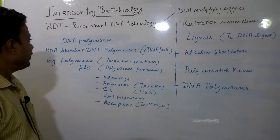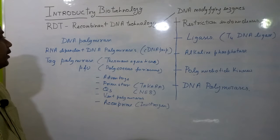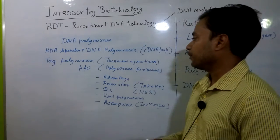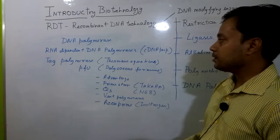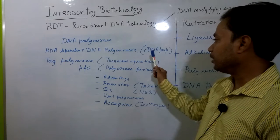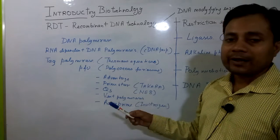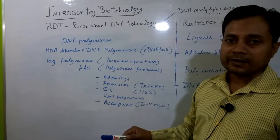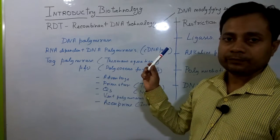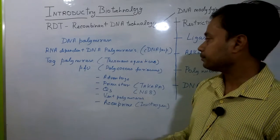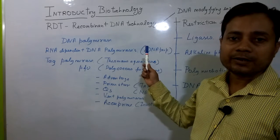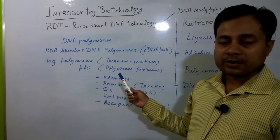The simplest and naturally found polymerases are DNA-dependent DNA polymerases, responsible for replication. Another important class of polymerase is RNA-dependent DNA polymerase, which is utilized for cDNA preparation. It uses RNA as a template molecule and synthesizes or incorporates nucleotide molecules on the RNA template to form a single-stranded cDNA. cDNA is complementary DNA, which we utilize for expression studies as well as cloning of ESTs — expressed sequence tags.